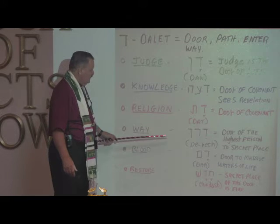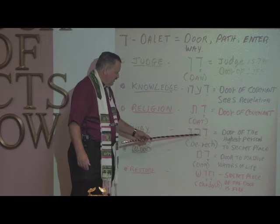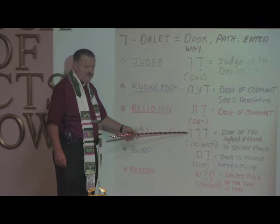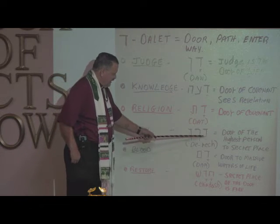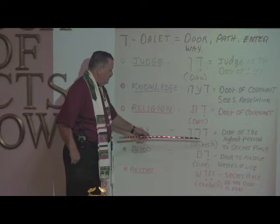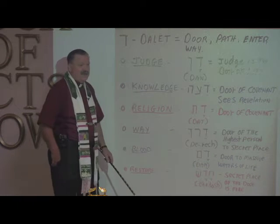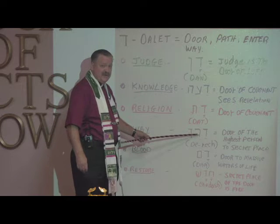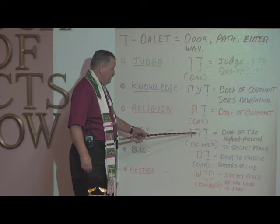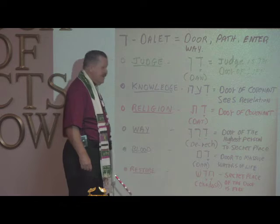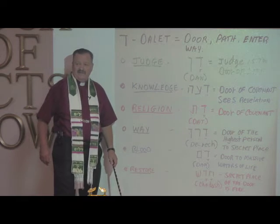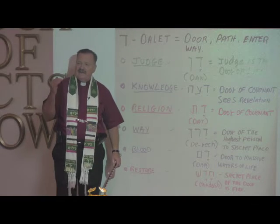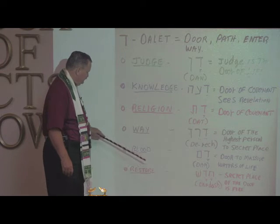Way. This is made up of three letters: the Dalet, the Resh, and the Chet — pronounced D-E-R-E-C-H, Derech. They called the early followers of Christ 'the Way.' So what does that mean? This is the door of the highest person to enter the secret place. Christ said, 'I am the door, I am the way.' The door of the highest person to enter the secret place — you can't just get in any way you want. The way is Christ. Nobody comes to the Father except by him. He's the only way. Amen.